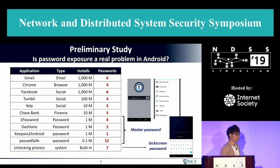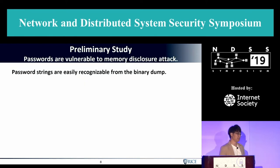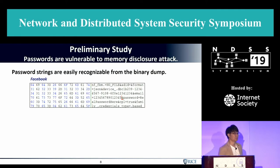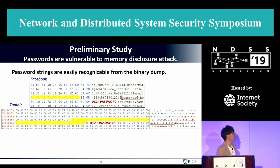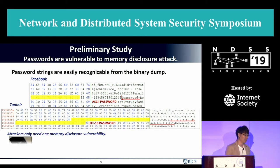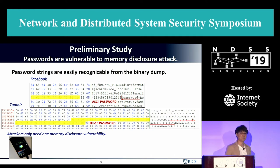For the unlock process, the user input is the lock screen password used to unlock the screen or decrypt the whole encrypted file system. Moreover, password strings are easily recognizable from a binary dump — for example, on Facebook the password comes after an ASCII 'password' prefix, and on Tumblr after a UTF-16 prefix. An attacker only needs one memory disclosure vulnerability, like on the Nexus 5X, which allows full memory dumping just by connecting USB for a very short time, even when the phone is locked.